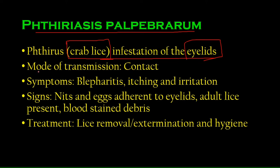The mode of transmission — how they get from one person to another — is through contact. The most common way crab lice spread is through sexual activity. Other than that, if you use the towel or tissue of an infected person that has lice or eggs on it, there's a chance they will transmit to you.